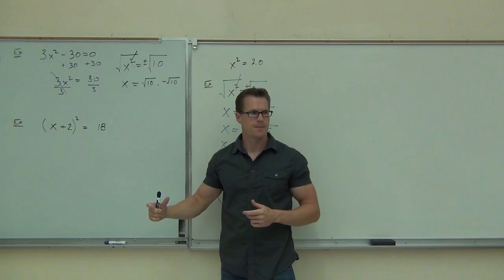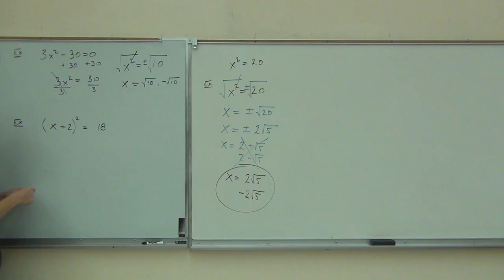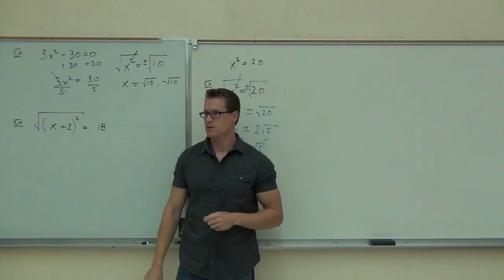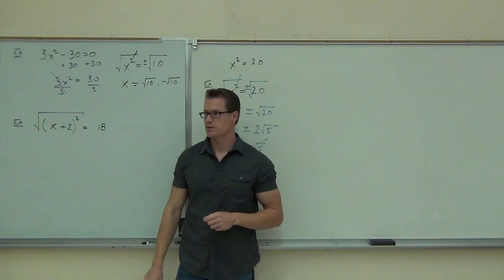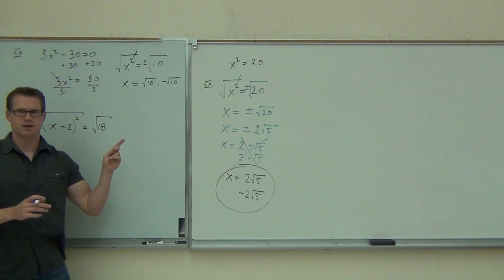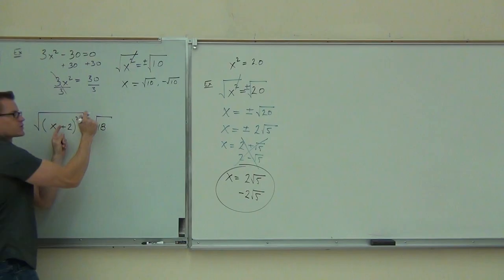We're still going to take a square root of both sides, and we still need a plus or minus. Nothing has changed so far. The only thing I'm teaching you today is how to take a square root of both sides and include a plus or minus — just get something squared by itself. The square and the square root cancel. On the left side you get x plus 2.